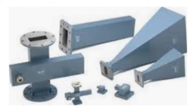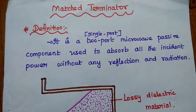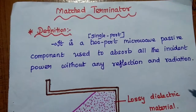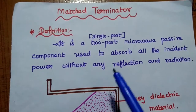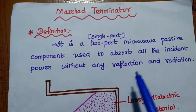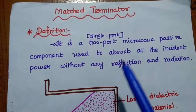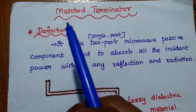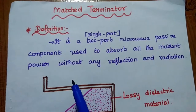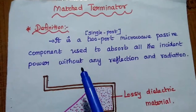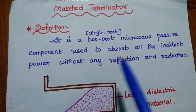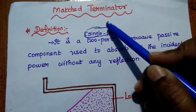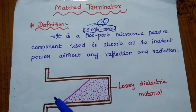Microwave waveguide components are metallic devices. The next topic is the matched terminator. A matched terminator is a two-port microwave passive component used to absorb all incident power without any reflection and radiation. Terminator means it is the end — there is no further transmission after termination. Whichever waves come towards the matched terminator, all incident signals are absorbed without any reflection or radiation.